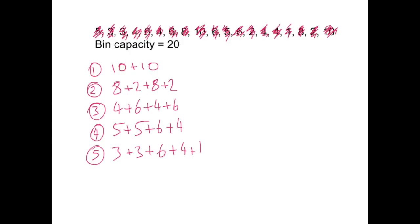Now if I had another number bigger than 3 that made the total for this fifth bin go more than 20, all I would do is add a sixth bin and put any remaining numbers in there. And that's it for that algorithm.